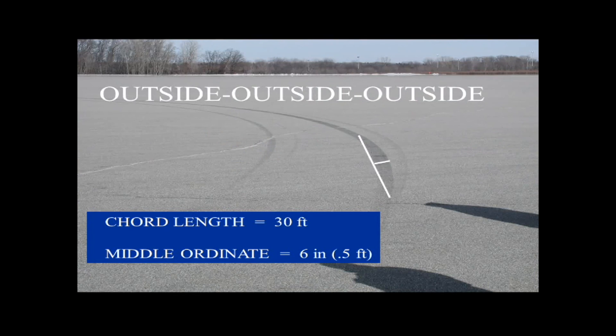So the chord is 30 feet and the middle ordinate is 5 inches — those are the numbers. The 5 inches has to be translated into half a foot, because all the units have to be the same for the algebra.